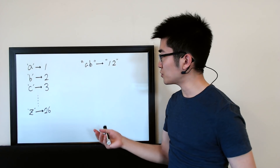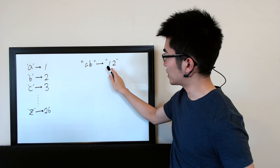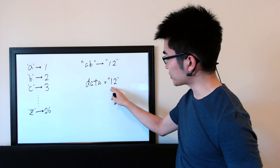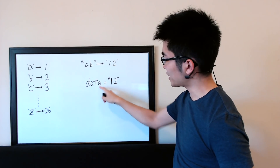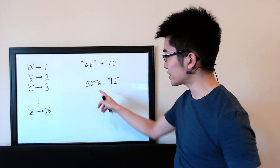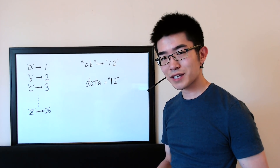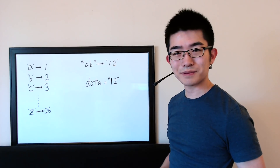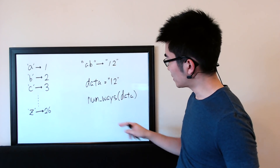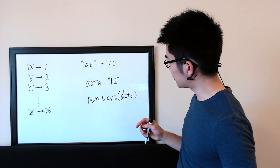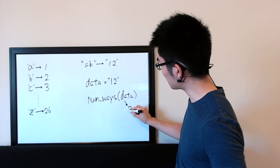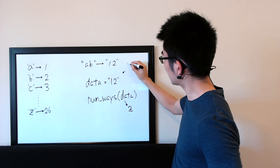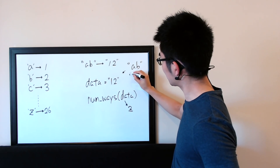With this mapping, if you're given a message in a string — for example 'AB' — you can convert it to another string, in this case '12', because A maps to 1 and B maps to 2. In this problem you're given the converted version of the string, for example '12'. The problem is: can you write a function that takes this data as input and returns the number of messages that could have been the original message — in other words, how many ways are there to decode this message back? So if the input is '12', your function num_ways(data) should return 2.